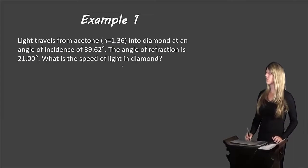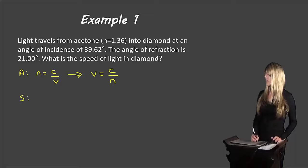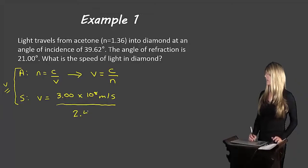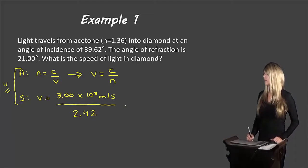Now we need to find V. Using the refraction equation, n equals c over v, and rearranging for V gives us V equals c over n. Substituting: V equals 3.00 times 10 to the 8 meters per second divided by 2.42 — the index of refraction of diamond that we just calculated — we end up with 1.24 times 10 to the 8 meters per second.